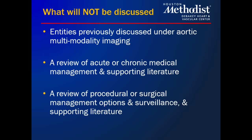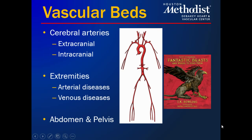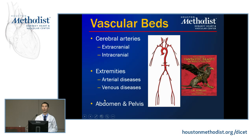In terms of imaging the vasculature, we have quite a few modalities — it's truly a multimodality endeavor. First line in all cases is usually the vascular laboratory. There's also MRA, CTA, and of course the gold standard of fluoroscopic angiography. It's best to classify disease entities in terms of their vascular beds: cerebral arteries both extracranial and intracranial, extremities arterial and venous, and abdominal and pelvic entities.